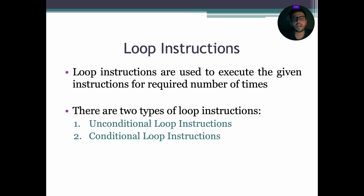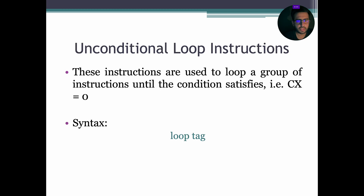Loop instructions are used to execute the given instructions for a required number of times. There are two types of loop instructions: unconditional and conditional. Unconditional loop instructions are used to loop a group of instructions until the condition CX equals 0 is not met. The keyword LOOP is utilized for unconditional loop instructions.